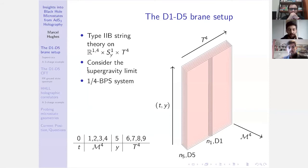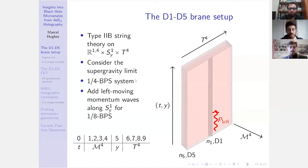We're now going to consider the supergravity limit — hence no more string theory — and reduce to just the massless spectrum. This system is one-quarter BPS with respect to the 32 supersymmetries of type IIB supergravity. This is called the D1-D5 system. We can also choose to add left or right moving momentum waves along the S^1, giving the D1-D5-P system, which is one-eighth BPS.